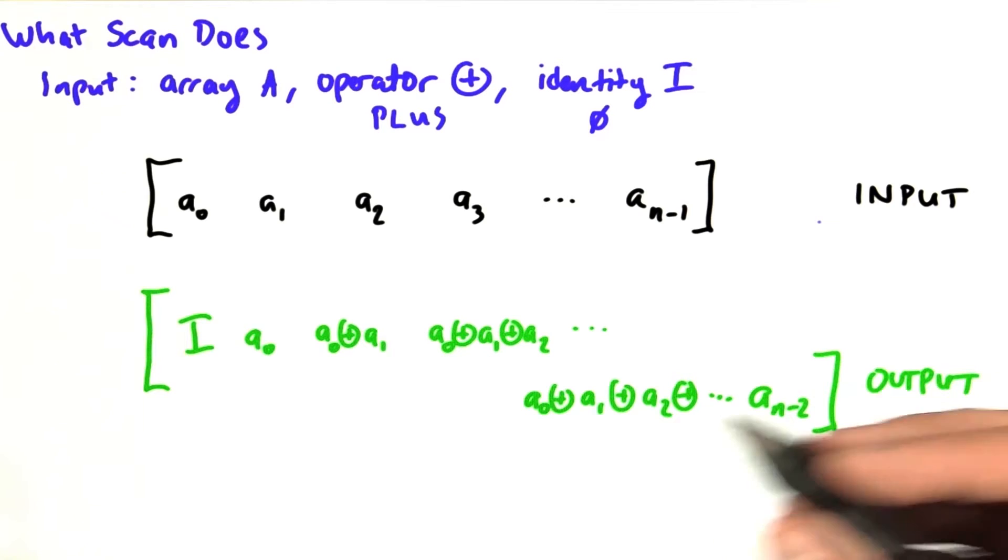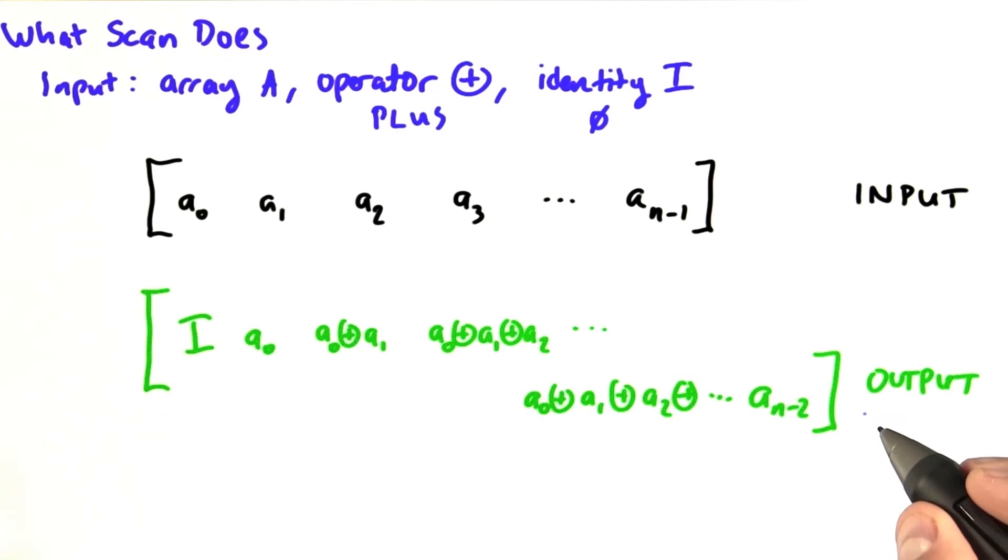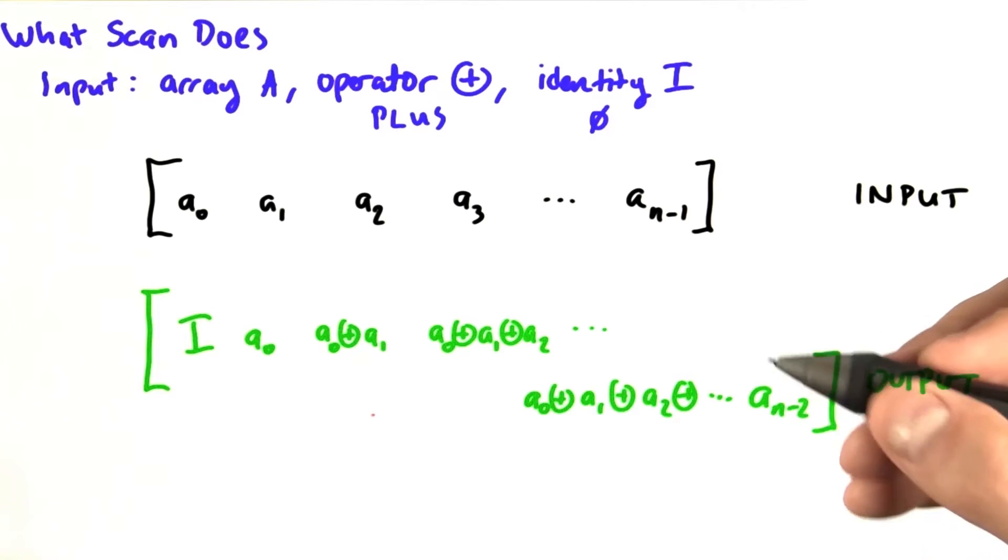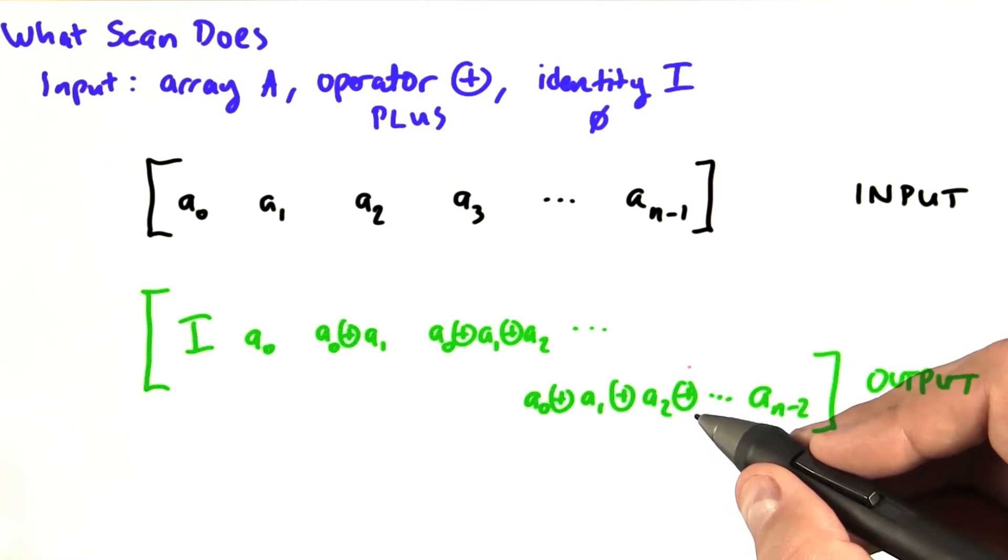And so the scan operation will produce an output given these inputs. So what does that output actually look like? So the output at any given position is the sum of all the elements that precede it in the input.